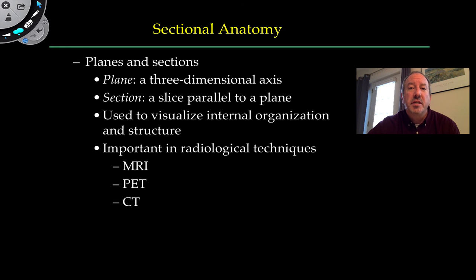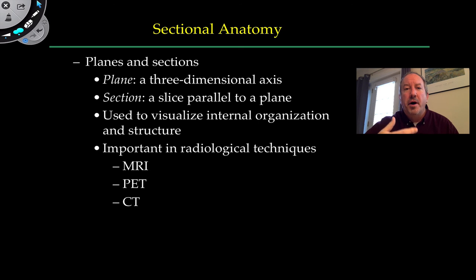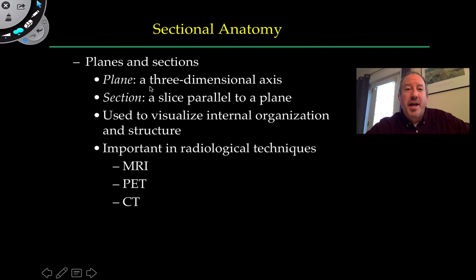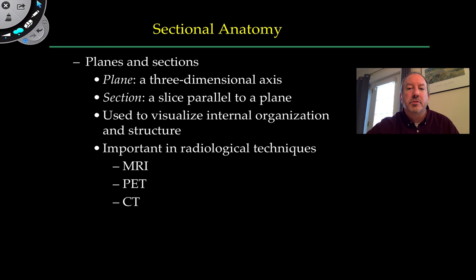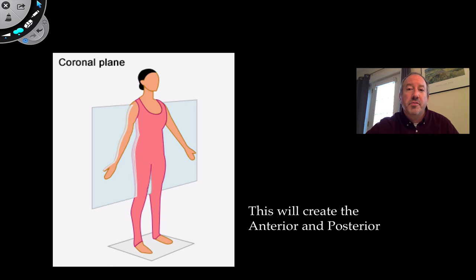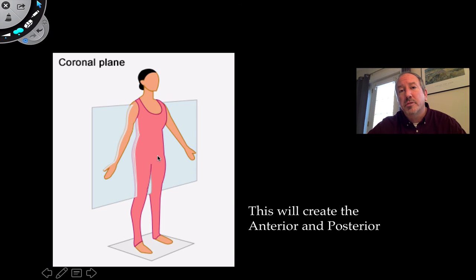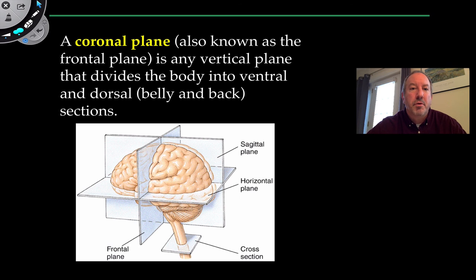Sectional anatomy is very important because this is when you start talking about radiological techniques like MRI, PET scans, or CT scans. You need to understand how the body can be sliced in terms of planes and sections. A plane is a three-dimensional axis, and a section is a slice parallel to that plane. We use this to visualize the internal organization of structures. The coronal plane, for instance, cuts the body to create the anterior front section and the posterior back section.